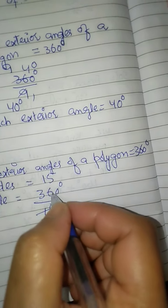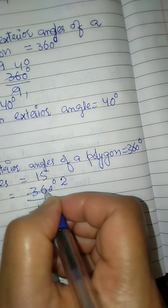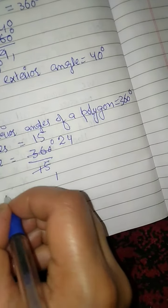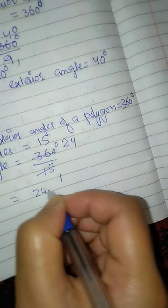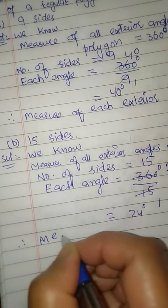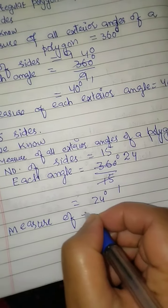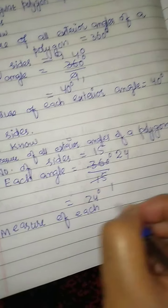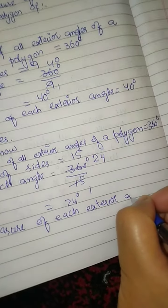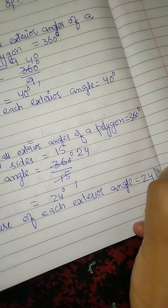360 divided by 15: 15 goes into 30 twice, that's 30, leaving 6. 15 goes into 60 four times, giving us 24. Therefore, the measure of each exterior angle is 24 degrees.